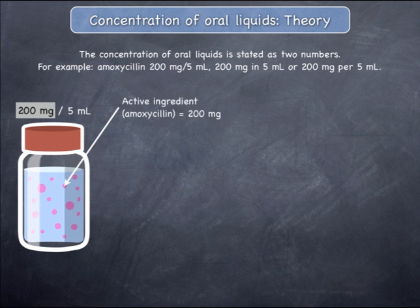The quantity of amoxicillin is represented by the first number in the concentration and by the pink circles, only for the purpose of illustration, in the image on the left. In this case, the quantity of the amoxicillin is 200 mg.